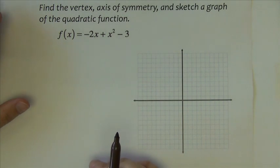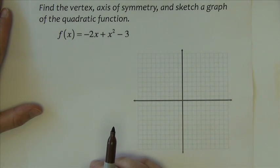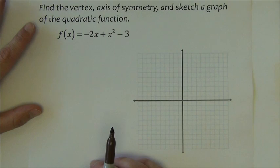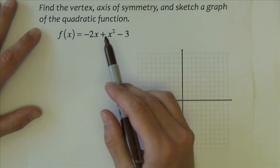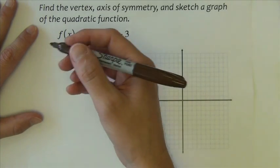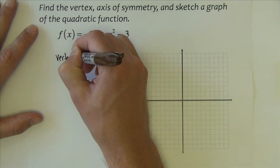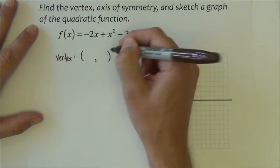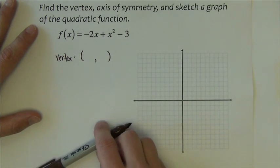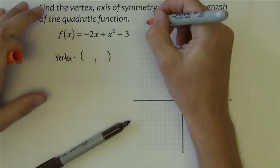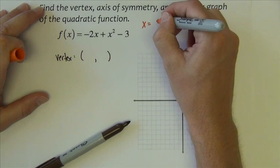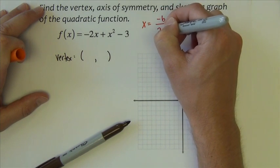Directions to this example ask us to find the vertex, the axis of symmetry, and sketch a graph of the quadratic function. Notice this function is in a standard or general form. We're beginning by finding the vertex point. The vertex is going to be an XY point, right? We all know that.